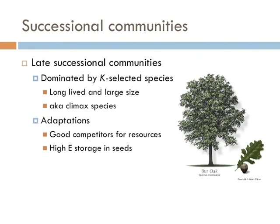Late successional communities, in contrast, are dominated by K-selected species. These are long-lived and typically large in size, also known as climax species — they live slow and long. K-selected species are typically very good competitors and have high energy storage in their seeds, making their seeds large and heavy, which greatly inhibits their ability to be dispersed. Climax species are slow to come to newly disturbed areas, but once they get there, they're very good competitors.